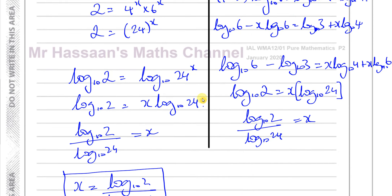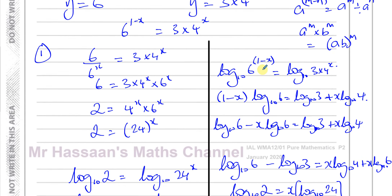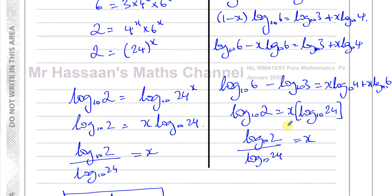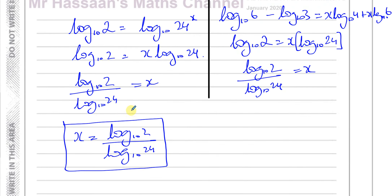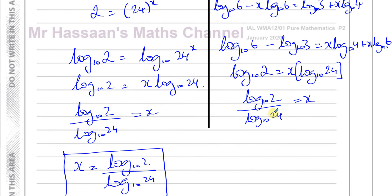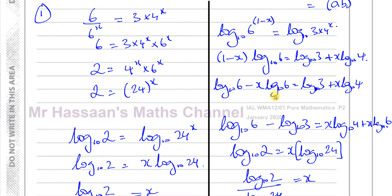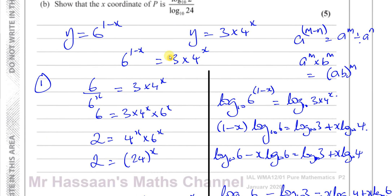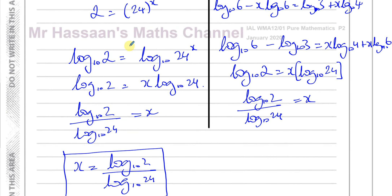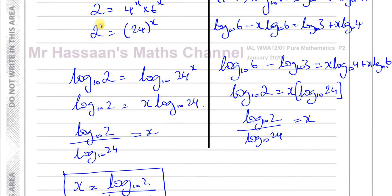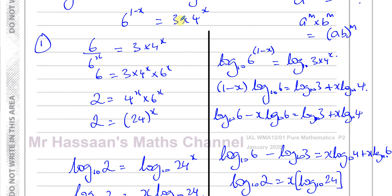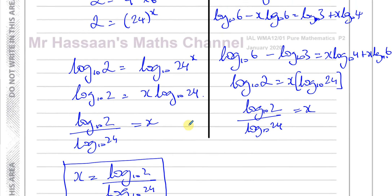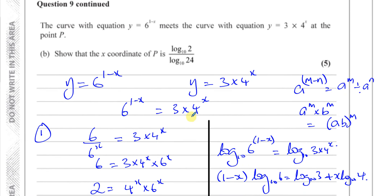I personally think the first method is easier; the second is more long-winded, but both are perfectly valid. You have to be careful showing your working clearly because the question already gives you the answer — you can't just write the result down. You must show your steps clearly to demonstrate how you reached that stage. And there's the answer for question number 9.